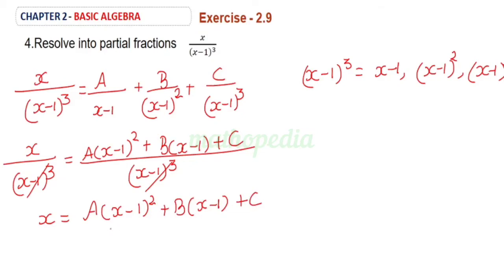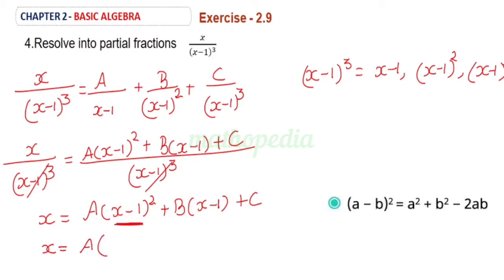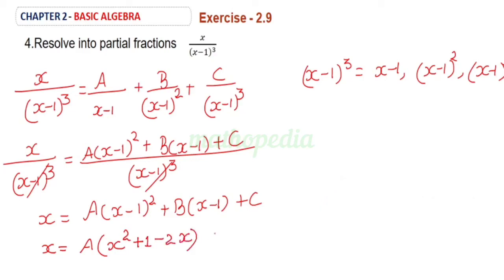Now we can assign suitable values for x to get the values of A, B, and C, or we can use another method. That is, x equals A into — using the (a minus b) whole square formula — so we get A into (x squared plus 1 minus 2x) plus B into (x minus 1) plus C.